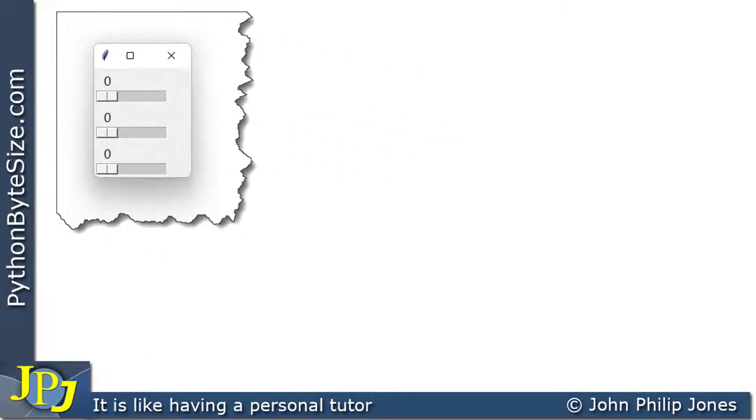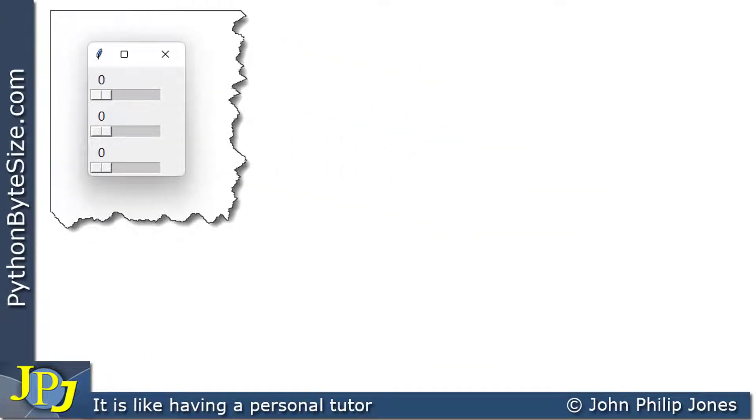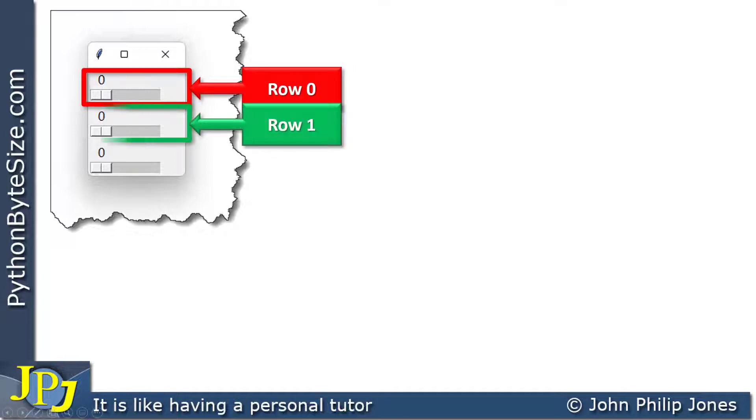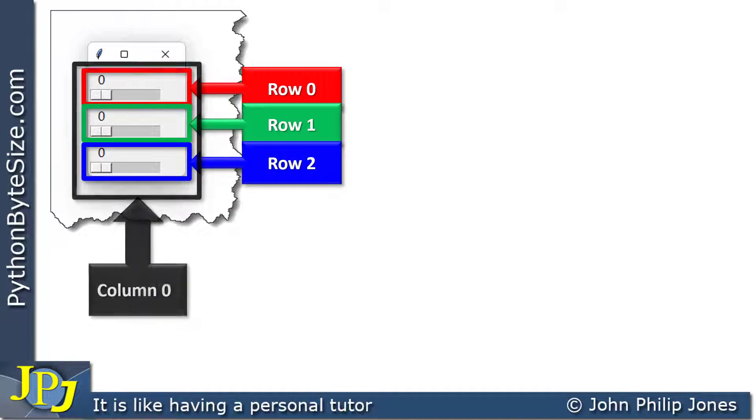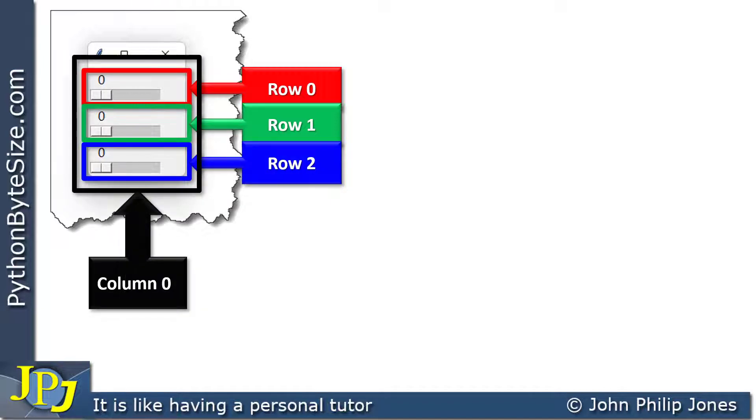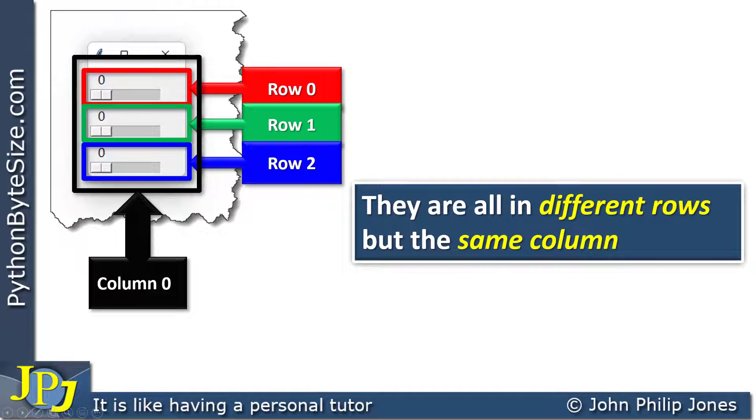We're going to be looking at the solution for this graphical user interface. Now we can see each of the widgets are in a different row, but they're all in the same column. So we can say they are all in different rows, but the same column.